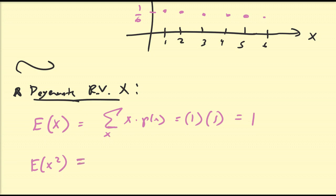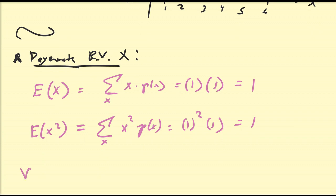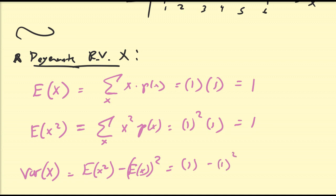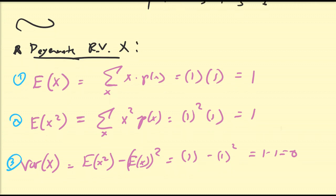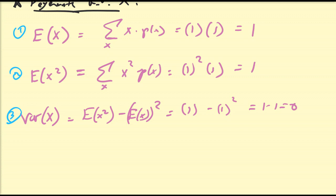The second moment of X, by definition, is the sum over all x in its support of x² times p(x). Again, there is only one value in the support, so it is 1² times 1, which equals 1. The variance is the second moment minus the square of the mean: 1 minus 1² equals 0. So the expectation, second moment, and variance of a degenerate distribution are 1, 1, and 0, respectively.